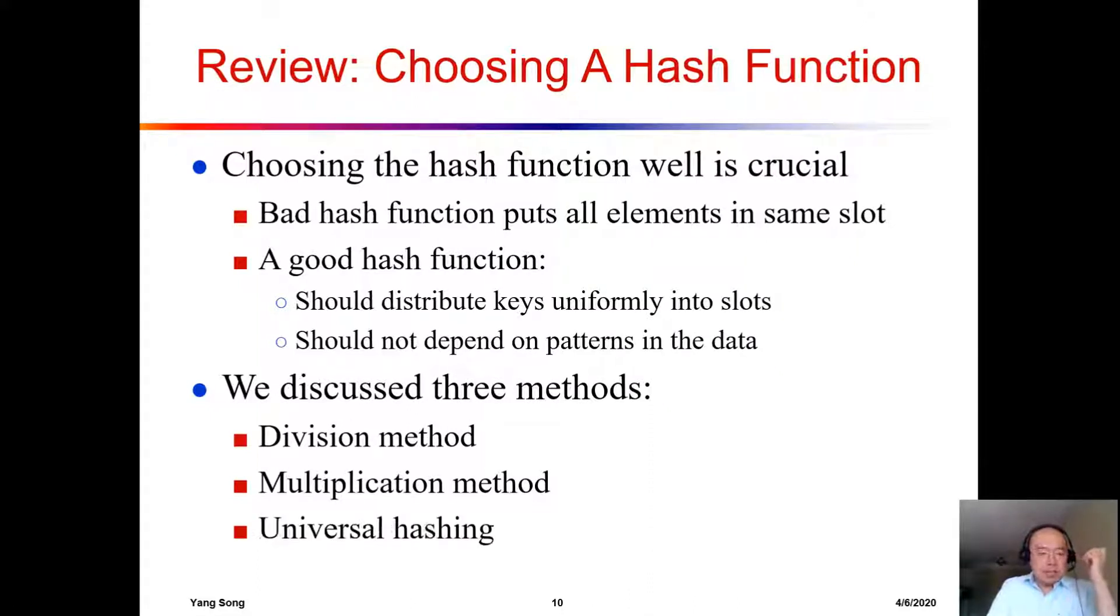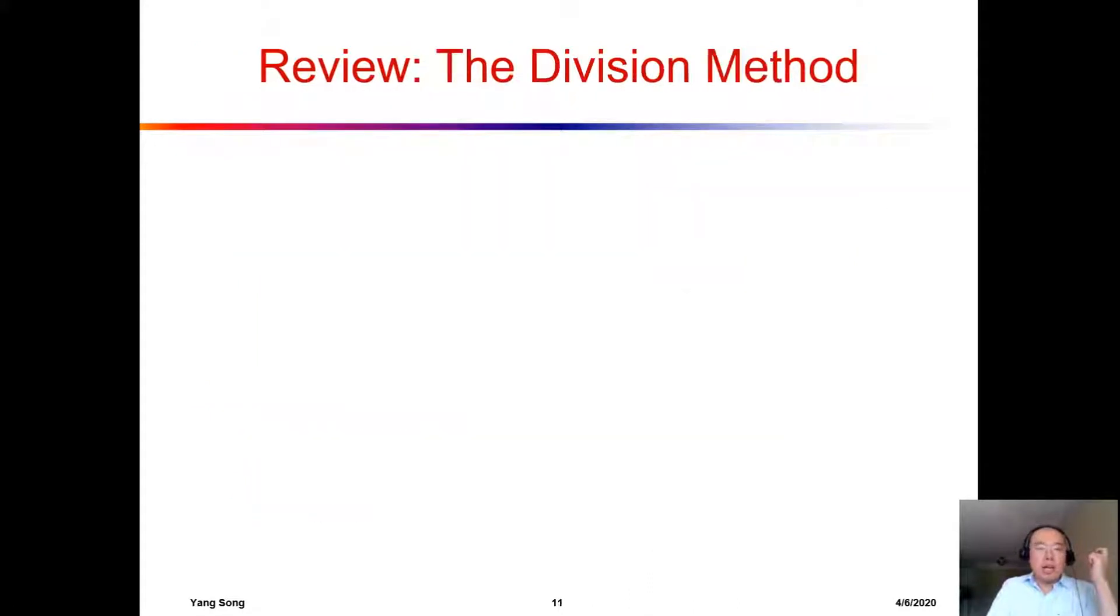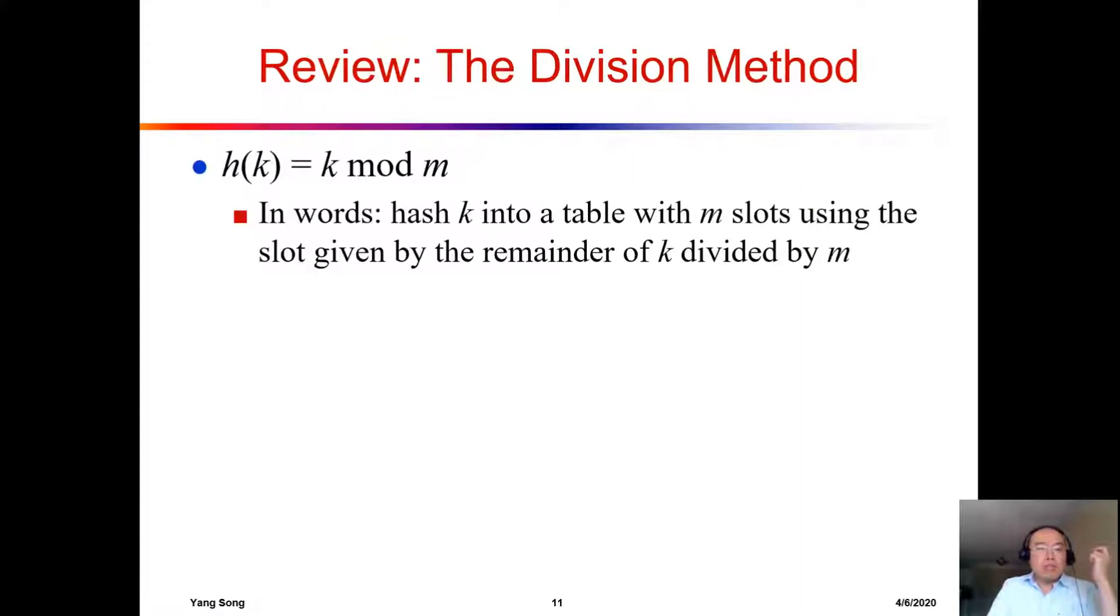For the division, this is probably the easiest. We take a key K and then we just do K mod M. Why do we mod M? Because M is the number of slots possible in the hash table. We take an integer K, mod it by M, and are guaranteed to have a value between 0 and M minus 1.